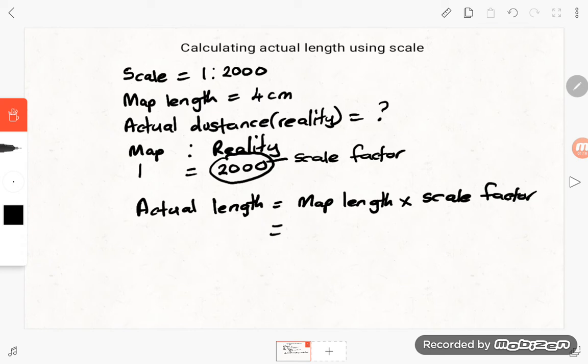So our map length according to the equation is 4 centimeters times our scale factor which is 2000. If we say 4 centimeters times 2000 we are going to get 8000 centimeters, but we want to leave our answer in kilometers.